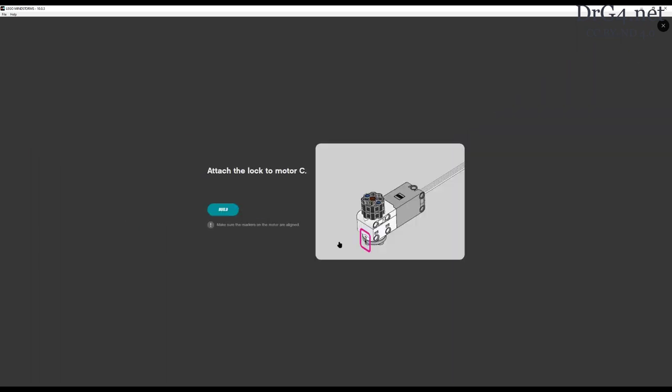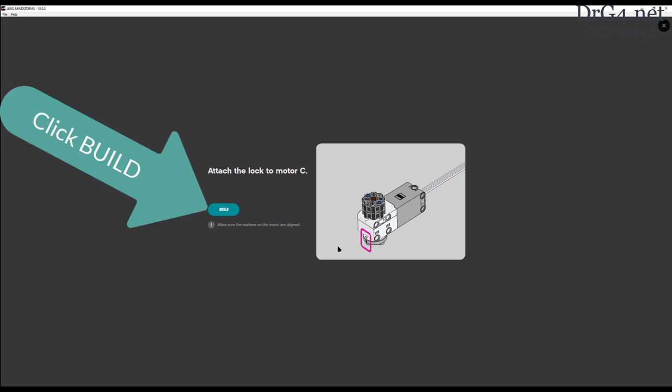We remove the lock from motor B. We put it on motor C and we go through the whole process again for updating motor C.